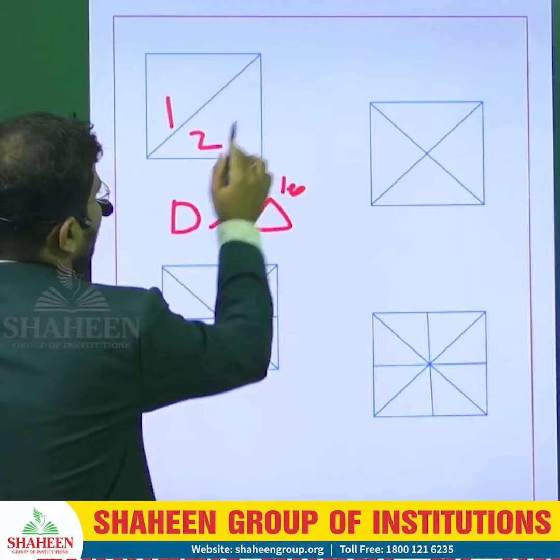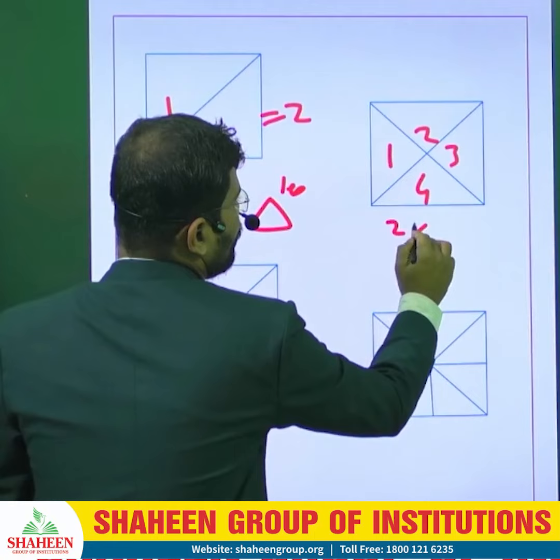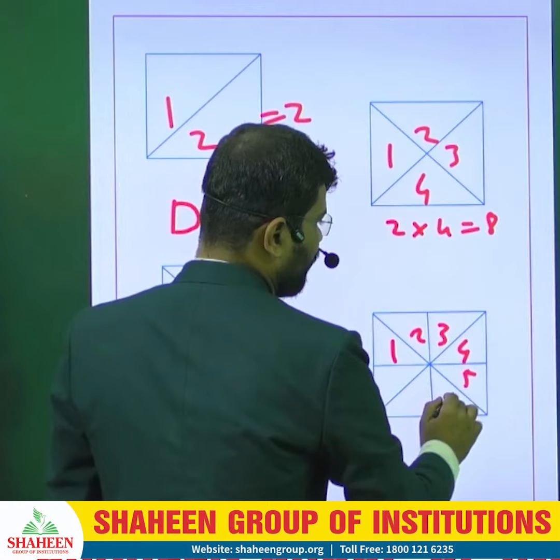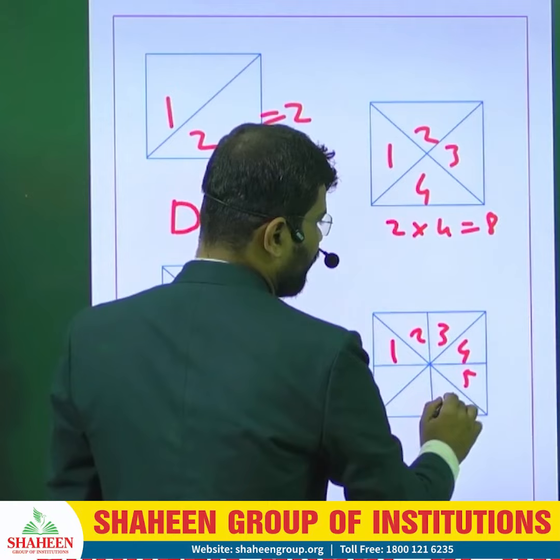Here we have two triangles — one, two — so 2 into 4 equals 8. Here one, two, three, four, five, six — so 2 into 6 equals 12. Again here one, two, three, four, five, six, seven, eight — so 2 into 8 equals 16. Simple, easy, over.